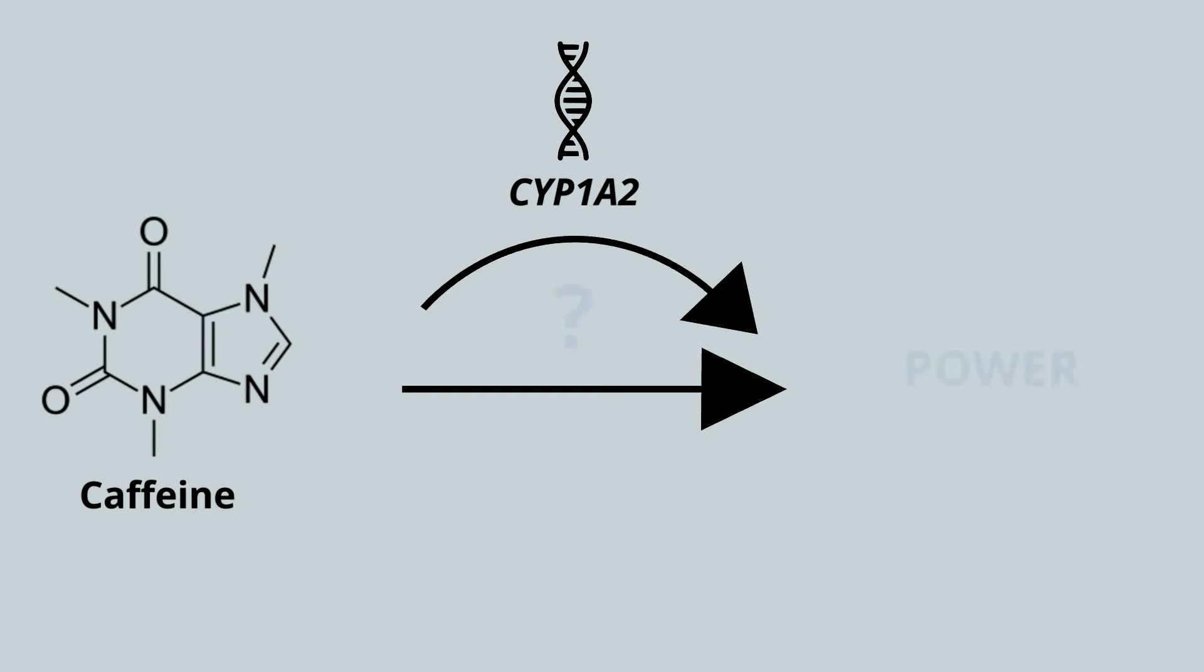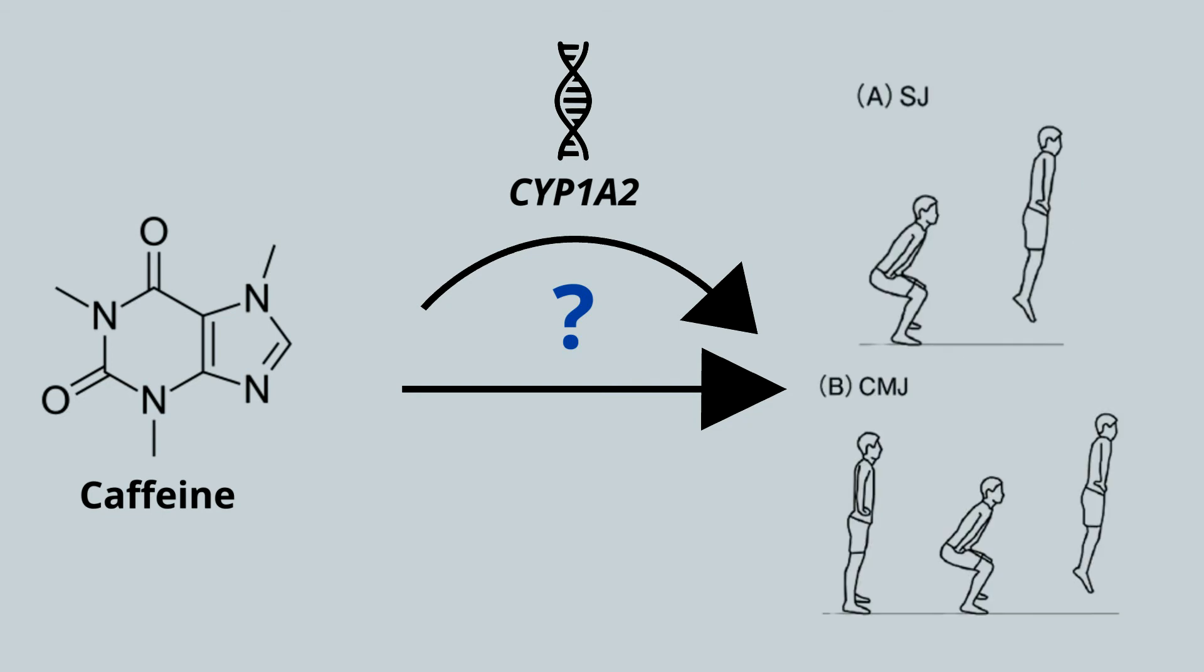We determined if variation in the CYP1A2 gene modified the effects of caffeine on power production. Athlete power is often assessed by vertical jump height during fitness testing, so we measured squat and counter-movement jump heights.